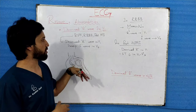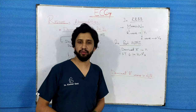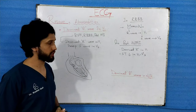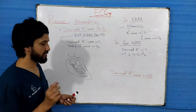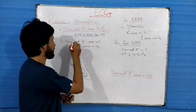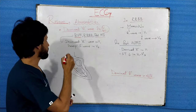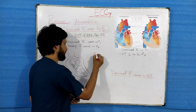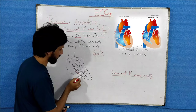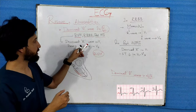Now we discuss each abnormality in detail. First: dominant R wave in V1. Normally you do not see a dominant R wave in V1. Conditions causing dominant R wave in V1 include RVH, RBBB, and posterior wall MI. In RVH, there is right ventricular wall hypertrophy — the right ventricular wall is hypertrophied, and you will see a dominant R wave in V1.